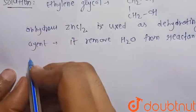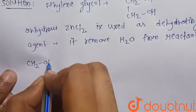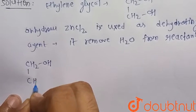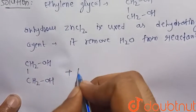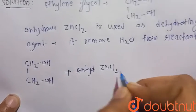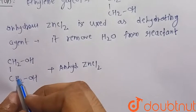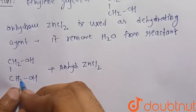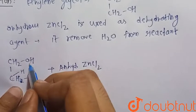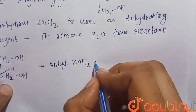Now consider the reaction, so this is the ethylene glycol that is CH2OH-CH2OH. So when it is treated with anhydrous zinc chloride, it will remove water that is H from here. That is we can write it in this way: H from this carbon and OH from this carbon will remove.